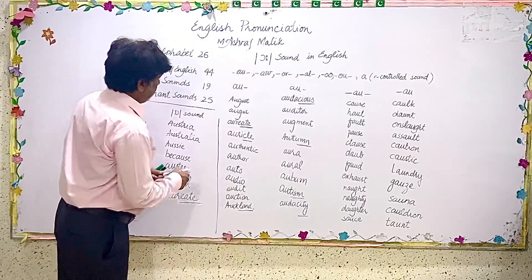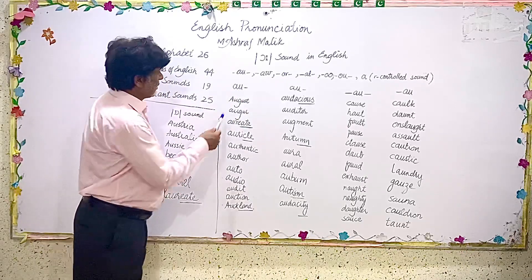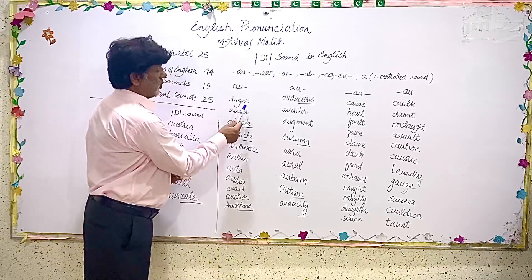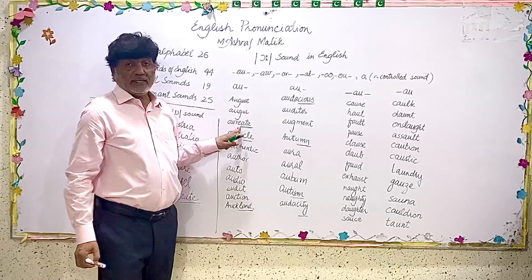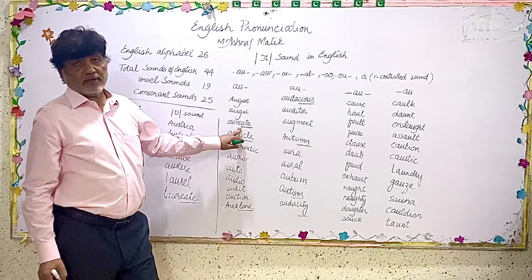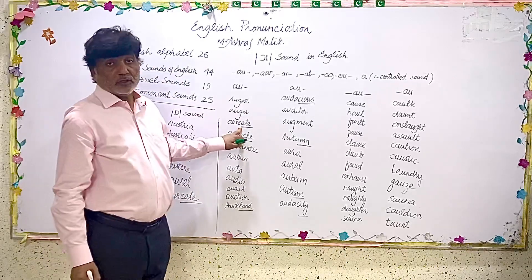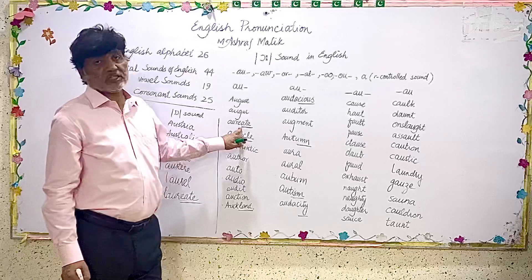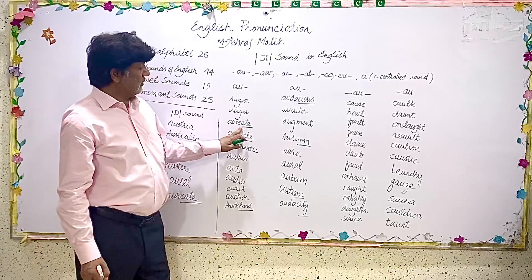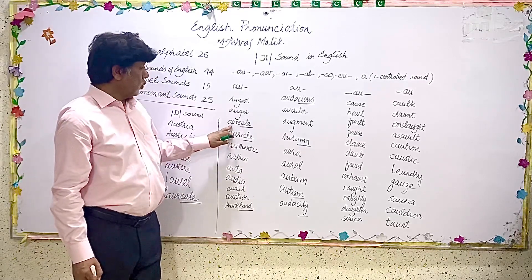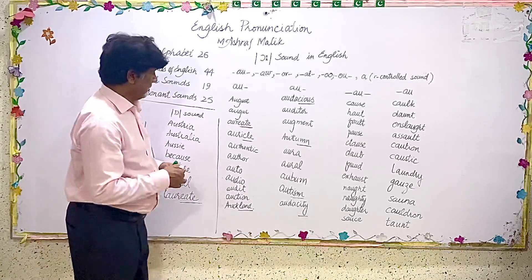Now we begin with the AU sound. When AU comes in the beginning of words, like 'August' and 'ogre.' Here you can see that -ATE is underlined. Whenever -ATE comes as a suffix and joins any other word, it behaves differently as far as pronunciation is concerned. For adjectives and nouns, it most of the times gives us the sound -AT. For example, 'laureate' is pronounced not 'laureate' but 'laureat.' When it is a verb, it gives us the longer sound -ATE.